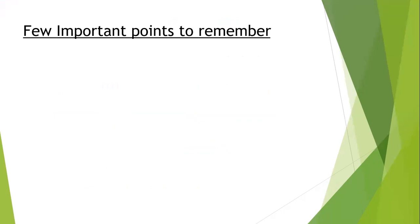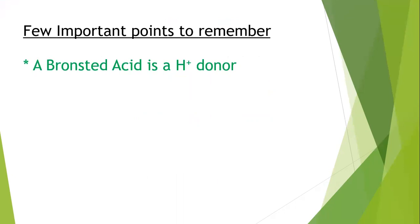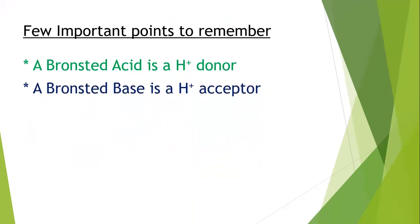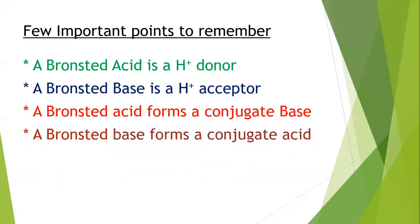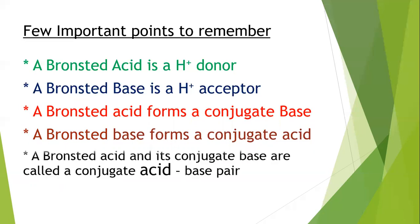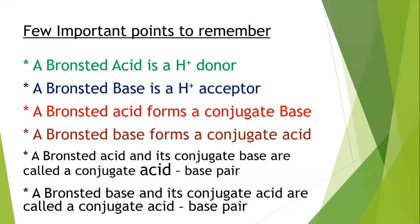To summarize the key points: a Brønsted acid is a hydrogen ion donor; a Brønsted base is a hydrogen ion acceptor. A Brønsted acid forms a conjugate base; a Brønsted base forms a conjugate acid. A Brønsted acid and its conjugate base are called a conjugate acid-base pair, and a Brønsted base and its conjugate acid are also called a conjugate acid-base pair. I hope this short video was able to explain clearly this topic from AS equilibrium.